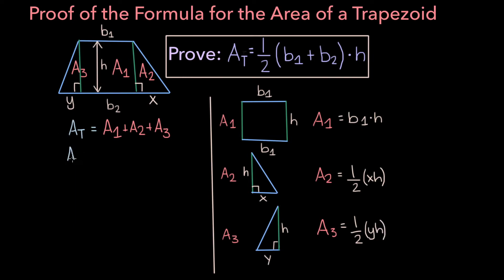So now we can return to the formula on our left. AT will be equal to A1, which is b1h, plus A2, which is x times h over 2, plus A3, which is y times h over 2.